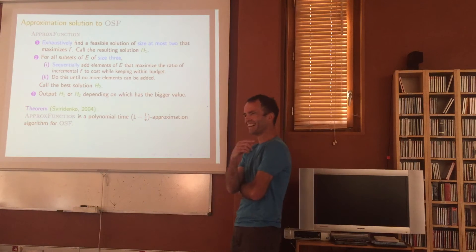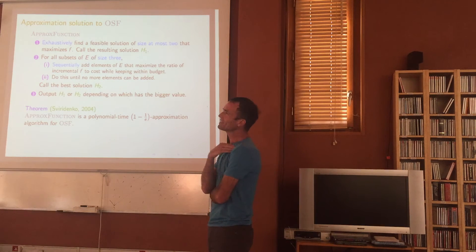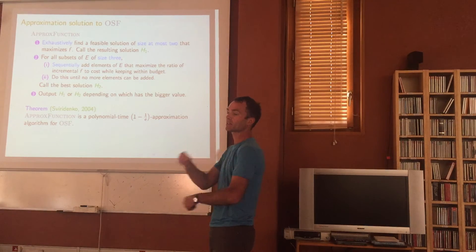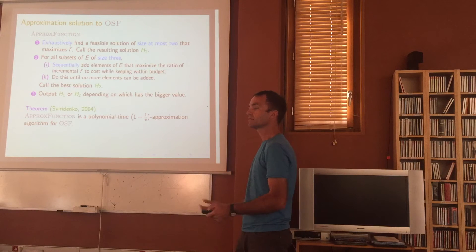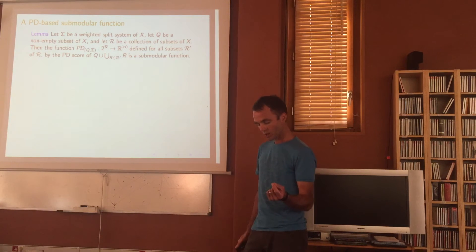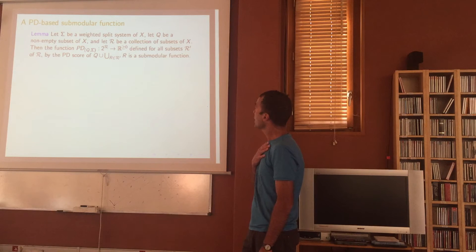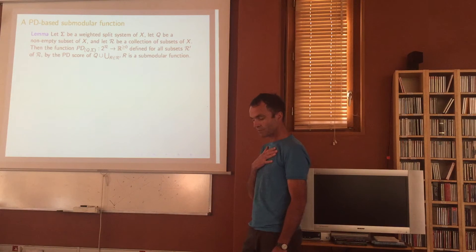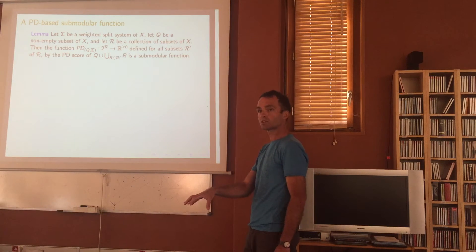The 2012 result with Magnus — that an arbitrary split system still gives 1 − 1/e — followed because we have an underlying submodular function. To get it: I need a non-empty subset Q of X, and I'm always going to include Q in my collection of regions. Let Q be a non-empty subset of X, and let R be a collection of subsets (regions). Then the function that gives the PD score of Q union the species in the selected regions is submodular.